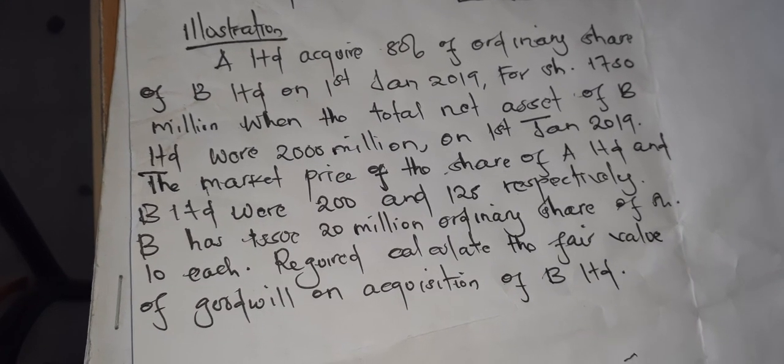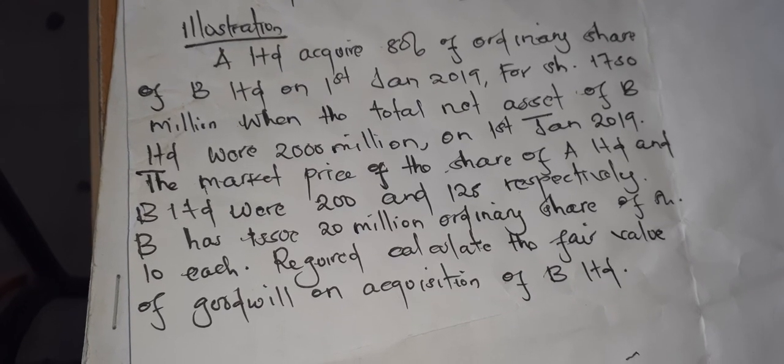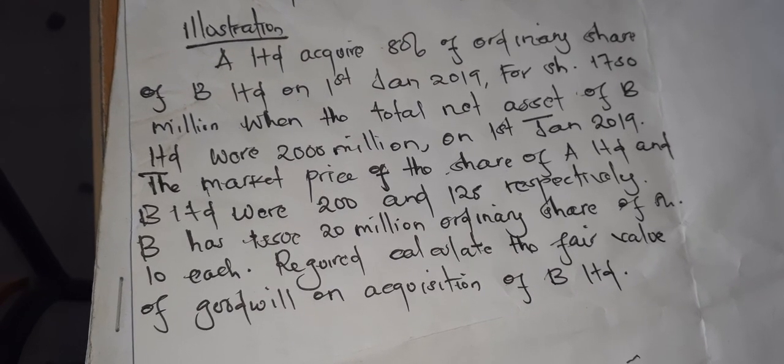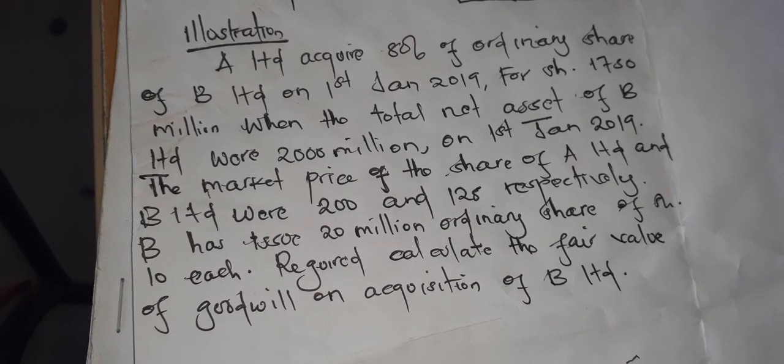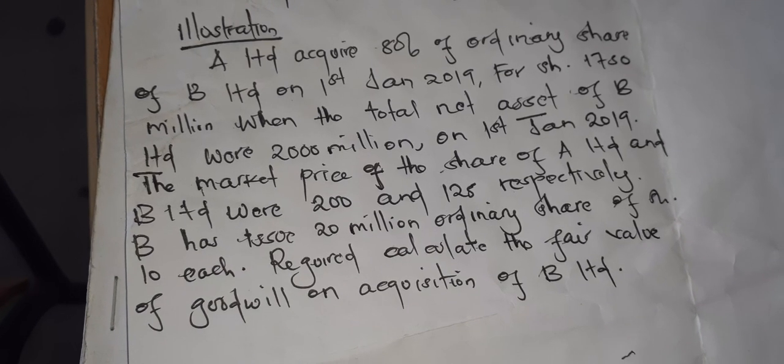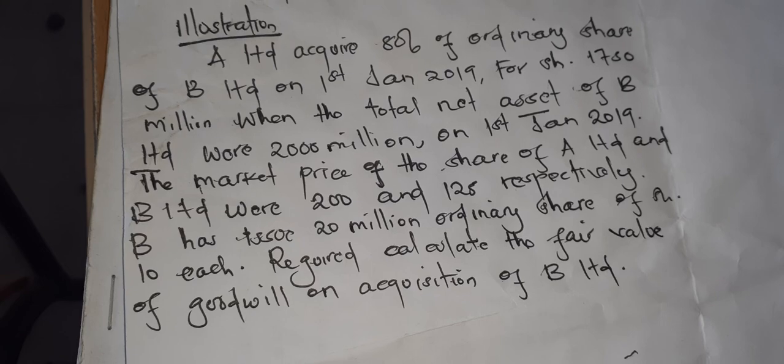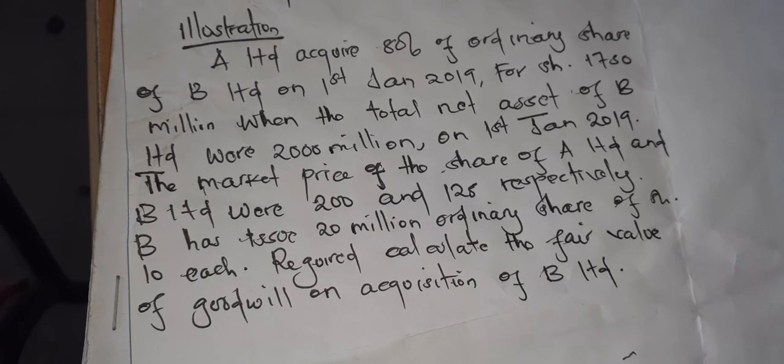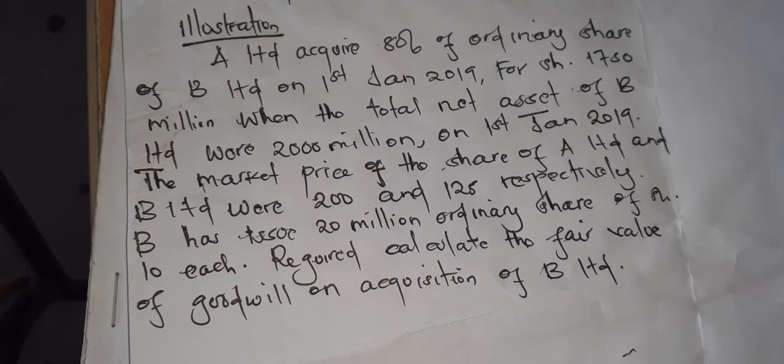For shillings 1750 million when the total net asset of the B Limited were 2000 million. On 1st January 2019 the market price of the share of A Limited and B Limited were 200 and 125 respectively. B has issued 20 million ordinary shares of shilling 10 each required.